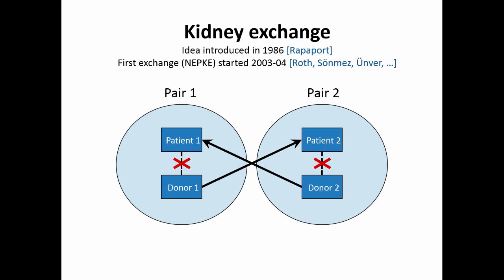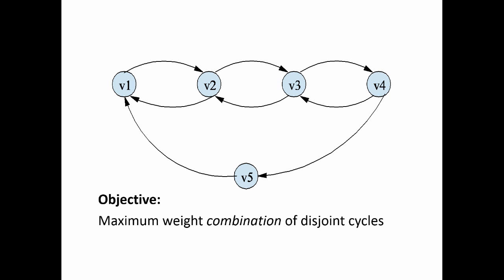More generally, we have a pool of willing but incompatible pairs — the blue vertices in a compatibility graph — with edges showing where compatibilities exist. We are trying to find a maximum weight combination of disjoint cycles. Finding that disjoint combination is a very hard combinatorial optimization problem, where the number of solutions is bigger than the number of atoms in the universe. That's the basic vanilla version of the problem from ten years ago; since then it's become much richer.